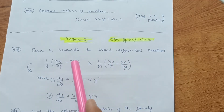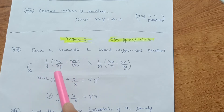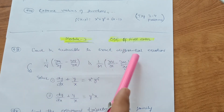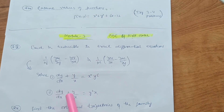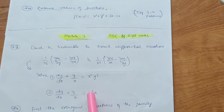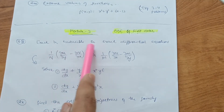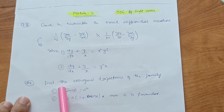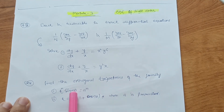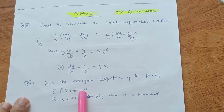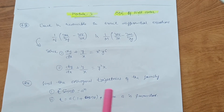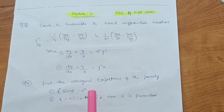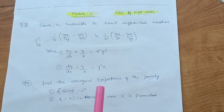Once you apply those steps, it becomes easy to cover exact and reducible-to-exact differential equations. Another example: dy/dx + y/x = y²x. In the exam they will ask you to solve such equations. Also, find orthogonal trajectories of a family — for example: r^n·sin(nθ) = a^n, or r = a(1 + cos(nθ)) where a is the parameter. Try two to three problems from this portion as well. That covers Module 3.